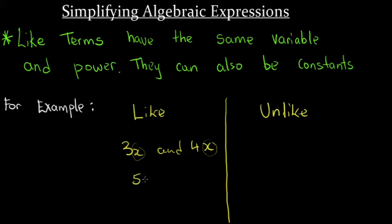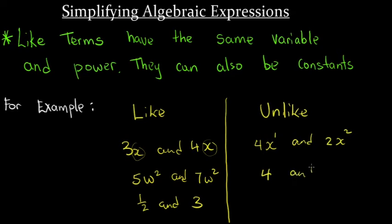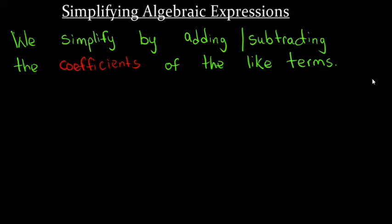Also, if we had 5w squared and 7w squared, both would be classified as like terms because the variables are the same and the exponents are also the same. Constants can also be like terms. Unlike terms are those that do not share the same variable and power. For example, 4x and 2x squared — even though the variables are both x, the powers are different, making them unlike terms. We can simplify like terms by adding or subtracting the coefficients.